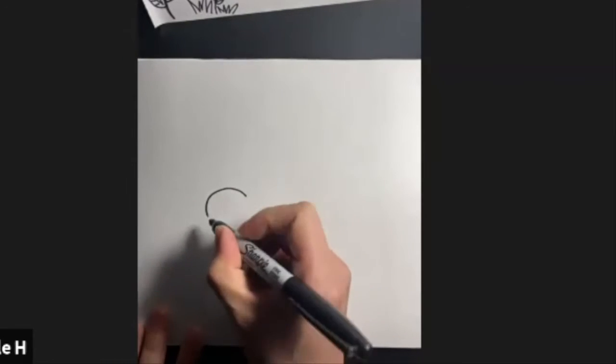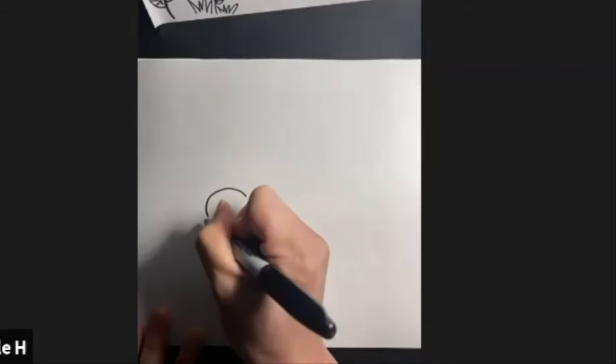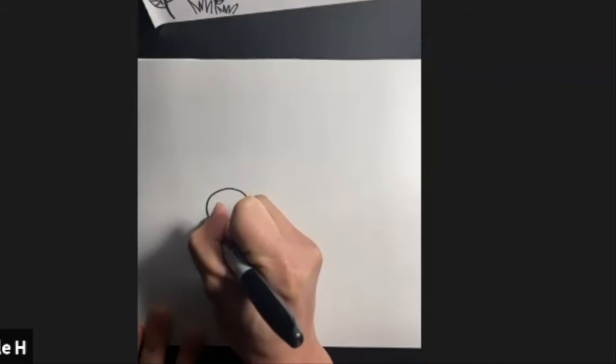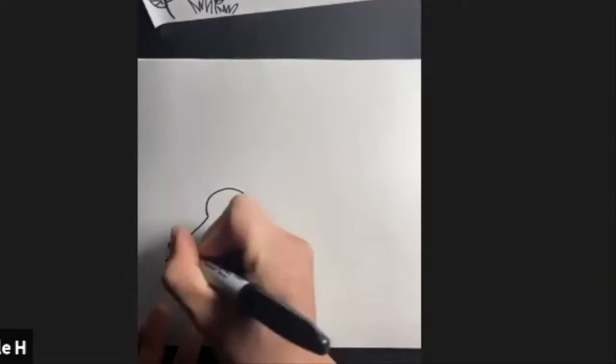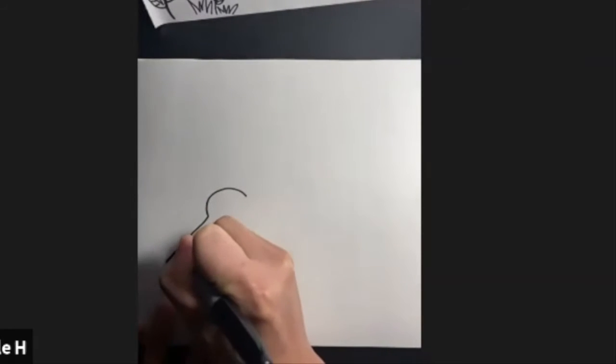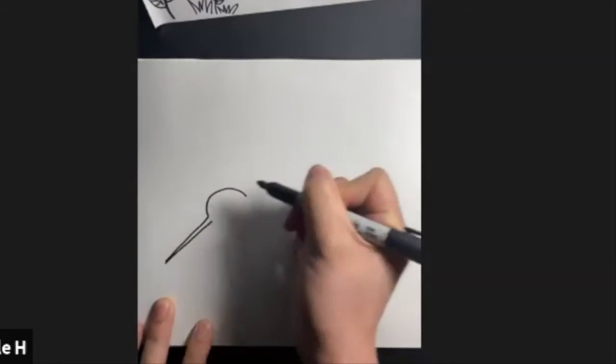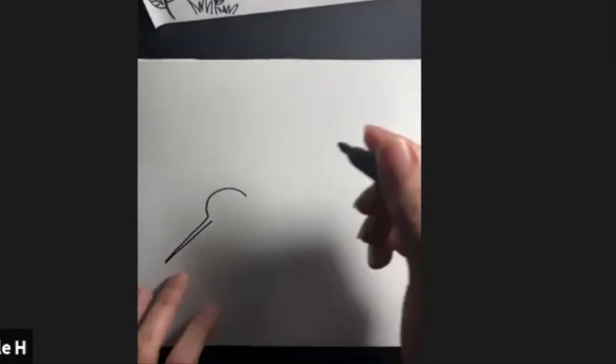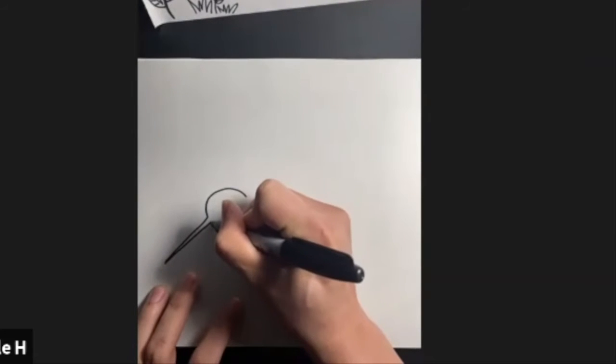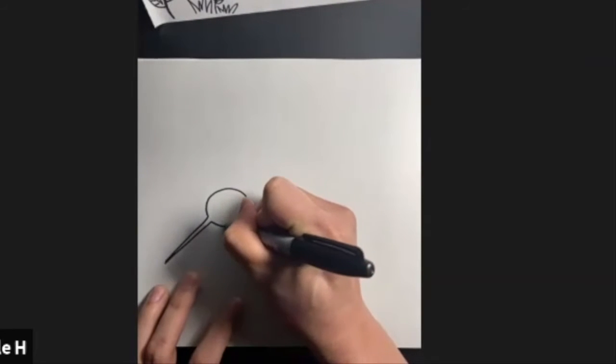Then from here, we're going to draw the bill. That's a long, kind of like a long beak, but they call it bill. The hummingbird's needle-like. And then the bottom of its head. Should look like this now.